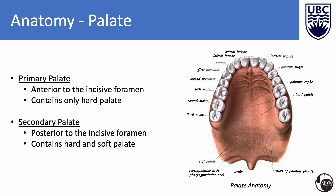The palate can be divided into two main portions: the primary and secondary palate. The primary palate is anterior to the incisive foramen and contains only hard palate. The hard palate provides a firm surface against which the tongue can press food during chewing, and it separates the oral cavity from the nasal passages above, playing a crucial role in speech and swallowing. The secondary palate is behind the incisive foramen and contains both the hard palate and soft palate. The soft palate is a flexible region consisting of muscle fibers and connective tissues, responsible for closing off the nasal passages during swallowing, preventing food from entering the nasal cavity. The soft palate ends at the uvula.